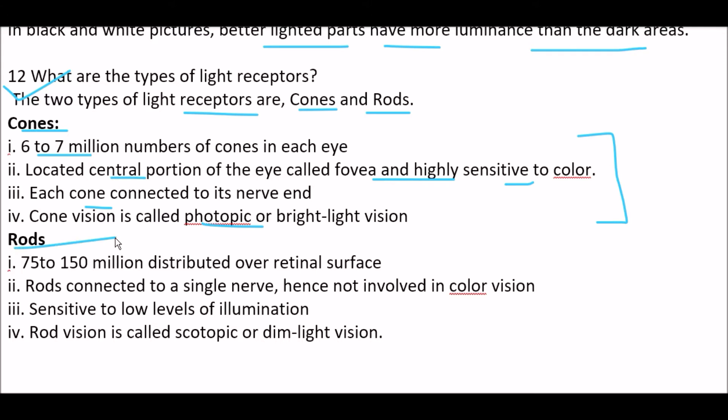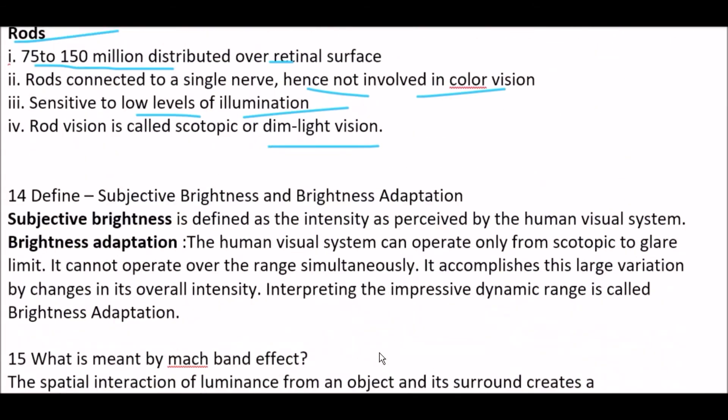Now, functionality of rods. In this, 75 to 150 million distributed over retinal surface. Second one is, rods connected to a single nerve, hence not involved in color vision. Third one, sensitive to low levels of illumination. And next one is, rod vision is called scotopic or dim light vision.